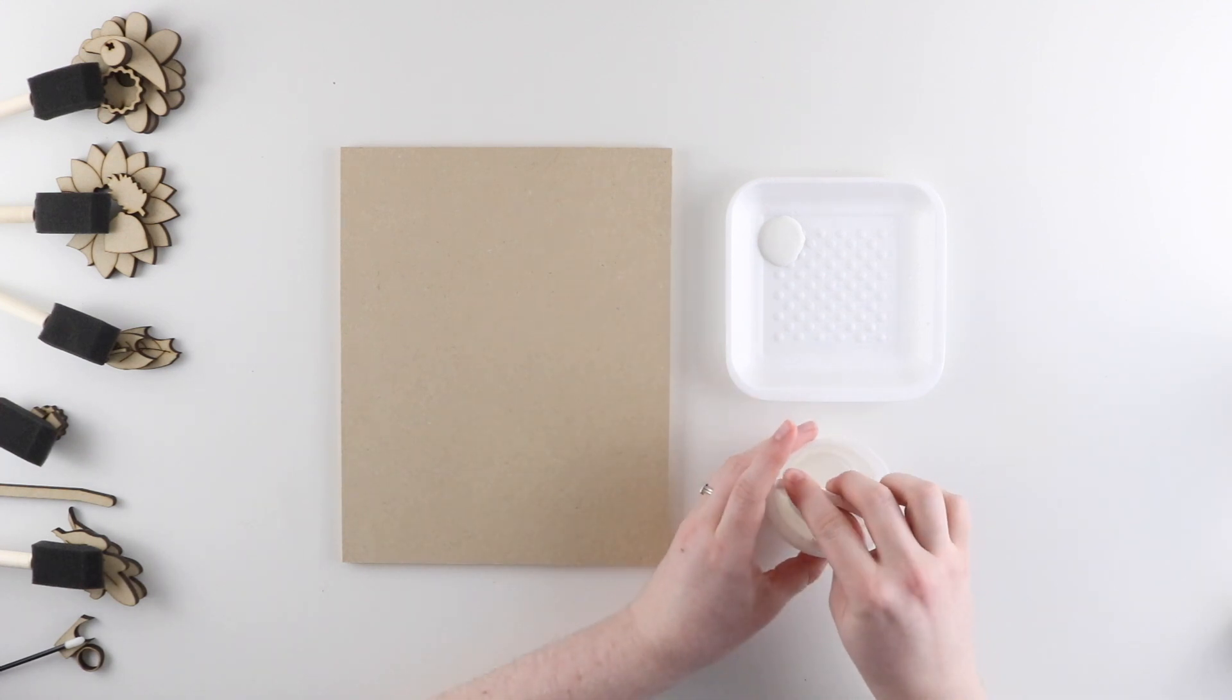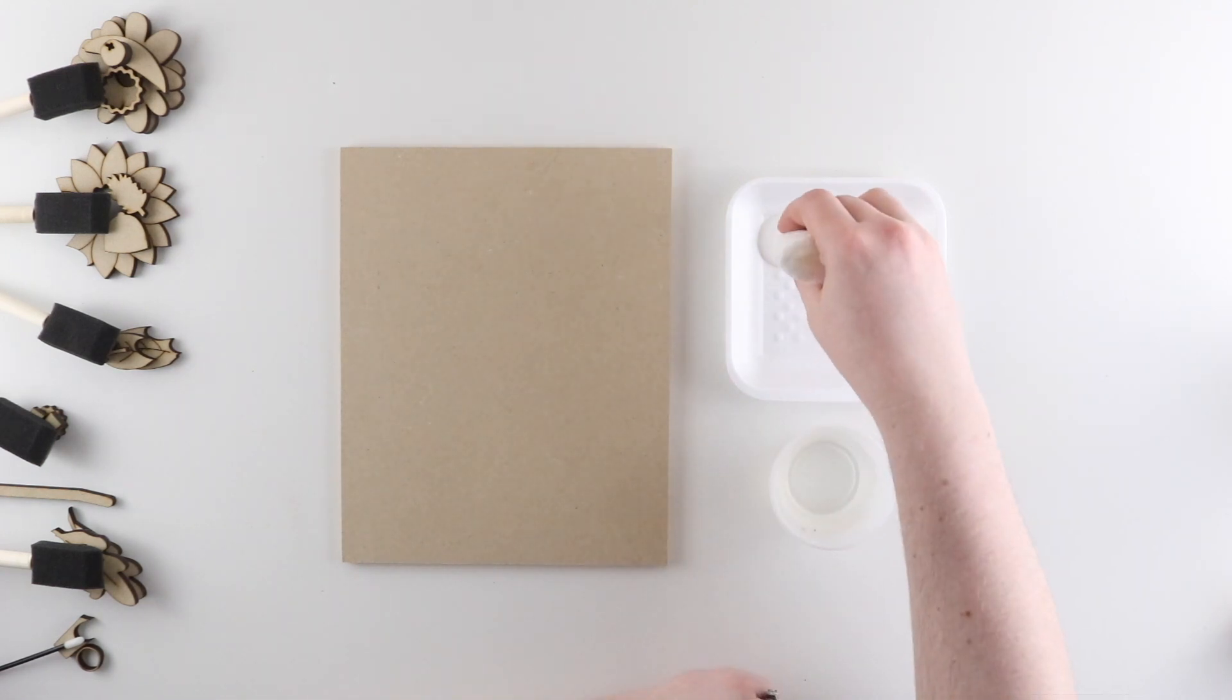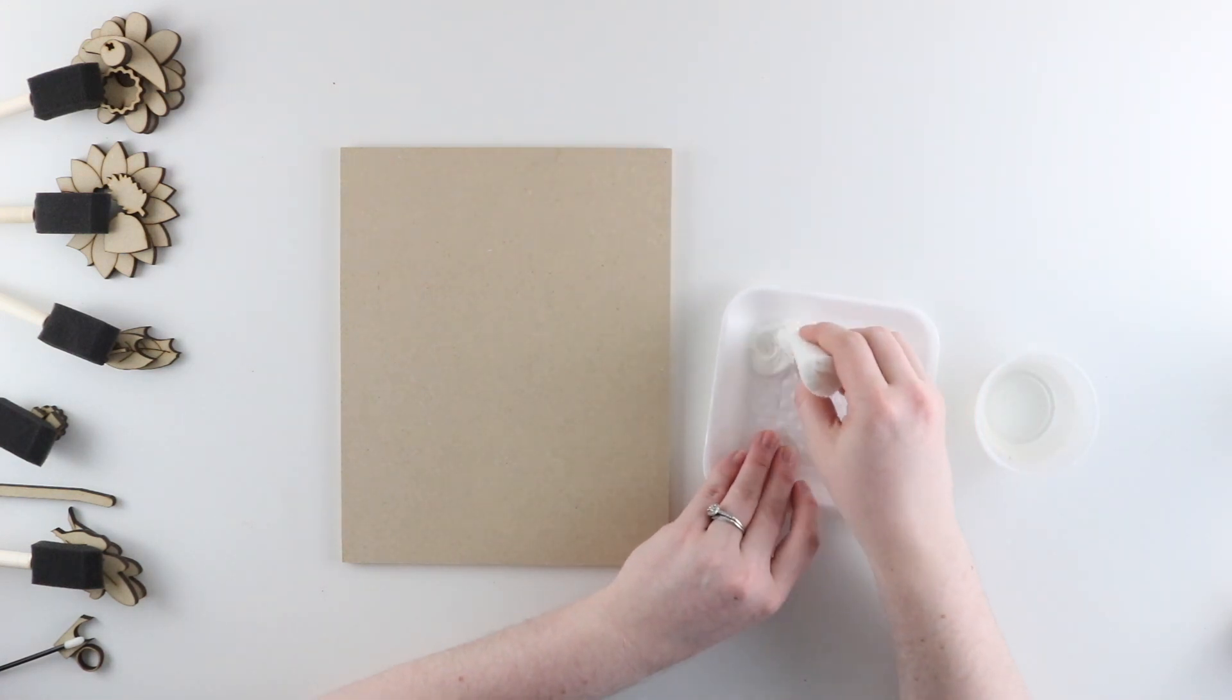First I need to rehydrate my sponge so it's nice and soft. I'm just going to do that by dipping it into the water. Then using my sponge, I'm going to get a few drops of water to add into the paint and I'll swirl that around with the sponge.